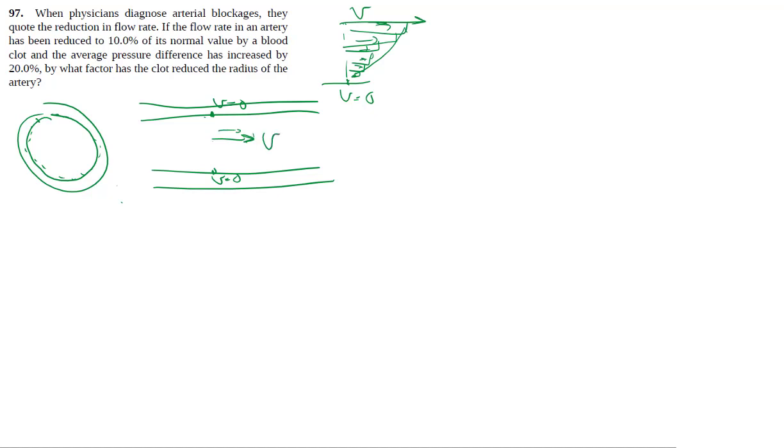And then again, the speed you can look at as smoothly transitioning between the different layers, or you can think of it as concentric rings of different speed.